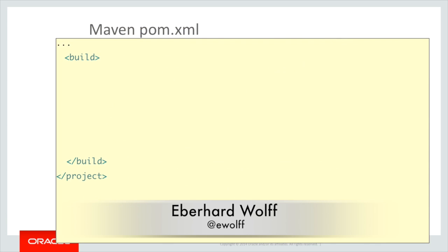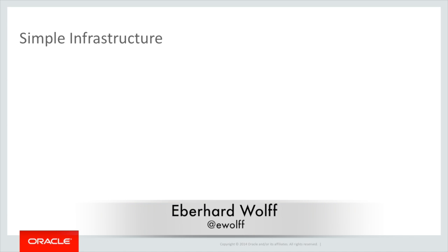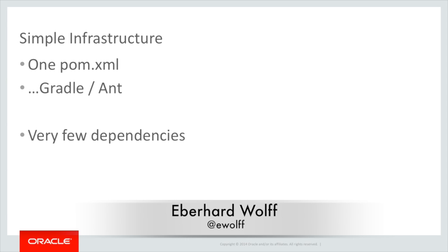Finally, we need to have a plugin that creates the JAR file that is executable, so you can just start it using java -jar. You can also have a WAR file, and actually you can have a hybrid - a WAR file that you can deploy on your application server and that also runs as an executable JAR. So it's obviously possible to run Spring Boot applications on an application server if you want to. Concerning simple infrastructure, we've seen that there is just a POM XML - you can also use Gradle or Ant. There are very few dependencies and you don't need to specify any versions. There is just one plugin, and the versions for all the libraries are actually defined.